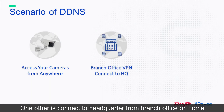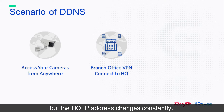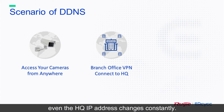Another scenario is connecting to headquarters from a branch office or home. You may use VPN to connect a branch office to headquarters and ensure security, but the headquarters IP address changes constantly. A fixed IP from ISP is too expensive. With the VE DDNS feature, connect to HQ with an easy-to-remember URL, even when the HQ IP address changes constantly.